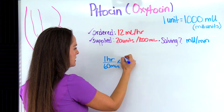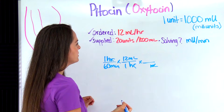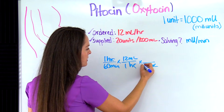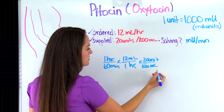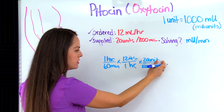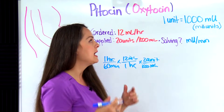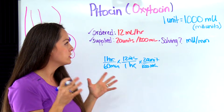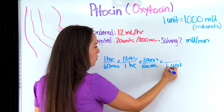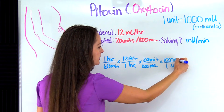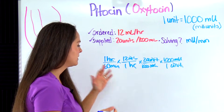Bringing hours down, we know that in one hour the patient needs 12 milliliters — this cancels out hours. Bring milliliters across and down. From what we're supplied with, 1,000 milliliters contains 20 units — this cancels out milliliters. Now I'm stuck with units per minute, but I need milliunits per minute. So I bring unit down and use our memorized conversion: one unit equals 1,000 milliunits. That cancels out units, and I'm at milliunits per minute — done.